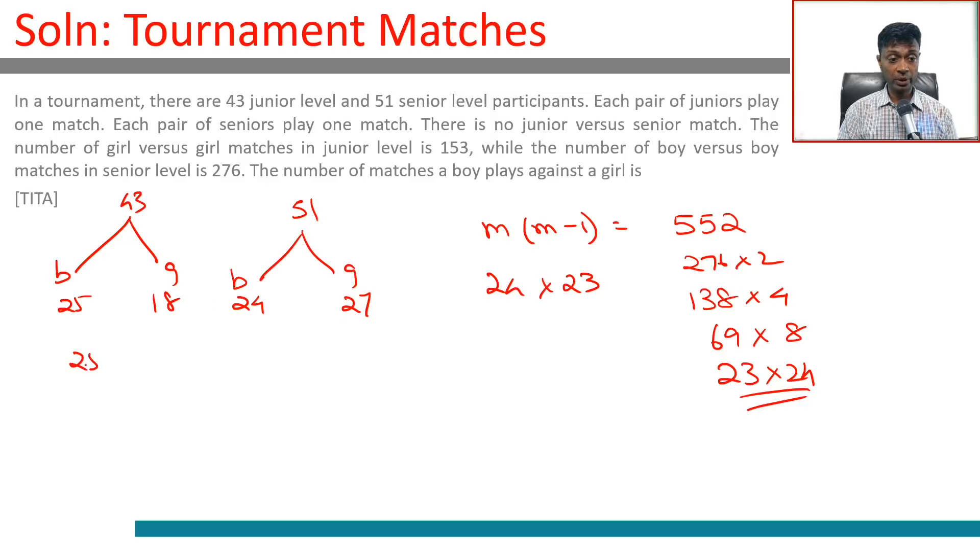The number of matches a boy plays against a girl is 25 into 18. All these boys have to play all these girls plus 24 into 27.